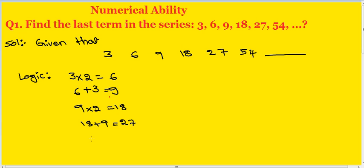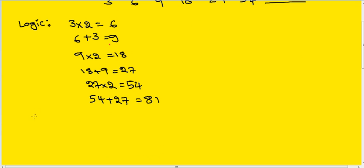27 into 2 equals 54. 54 plus 27 equals 81. Therefore, our answer is 81. Therefore, the last number equals 81.